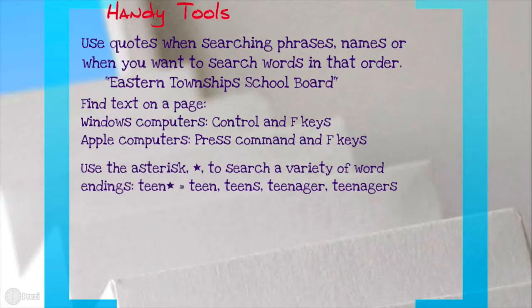You can also use the asterisk, which is above the number 8 — Shift 8 — and you can search a variety of word endings. So if I search 'teen*', I'll get teen, teens, teenager, and teenagers.